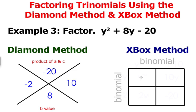In the upper left corner you're going to write the y squared term. And lower right corner you're going to write the c value, negative 20.